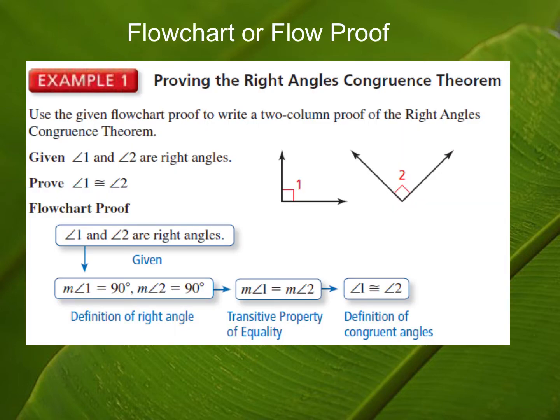This is actually an example of a flowchart proof proving that last theorem. On the next slide, we're going to write a two-column proof for this theorem. I'm not going to ask you to prove any theorems on the test, but this is a helpful way to get the idea of how proofs are written. We're going to write the same information, but instead of boxes with arrows, we'll write it as a two-column proof.